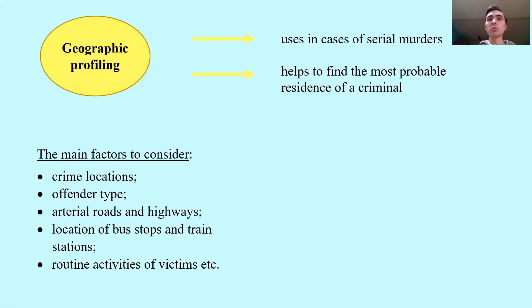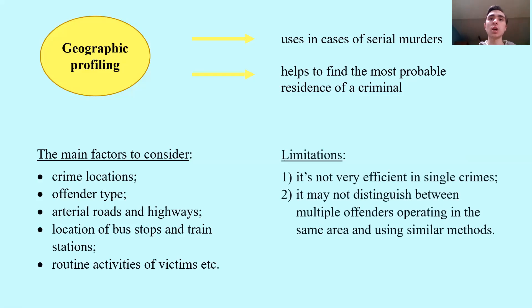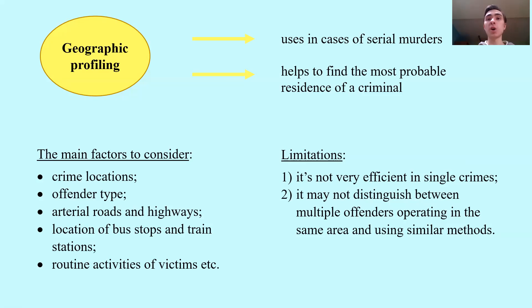Although geographic profiling is quite useful in cases of serial murders, it still has some disadvantages and limitations. First of all, it's not very efficient in single crimes, as geographic profiling is usually used in cases of serial murders. Also, it may not distinguish between multiple offenders operating in the same area and using similar methods.